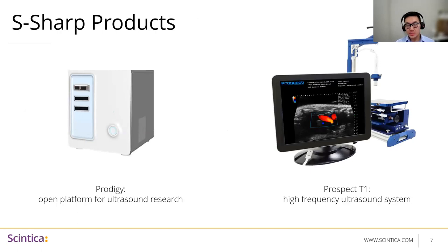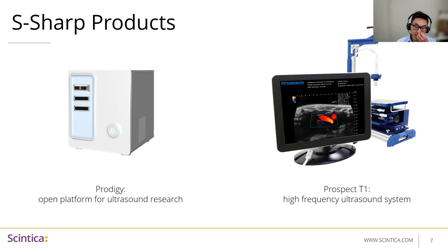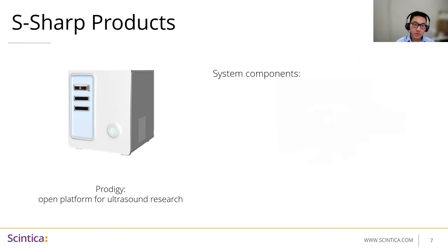S-Sharp provides two main systems. The Prospect T1 is essentially the first tablet-based tabletop ultrasound system for preclinical imaging, primarily used for mice and rats. It's very portable — they demo this system carried in a Pelican case — and it provides access to pre-beamformed raw data with all processing done in software, allowing easy updates. However, what we'll really be looking at today is the Prodigy.